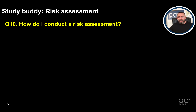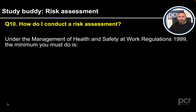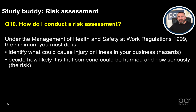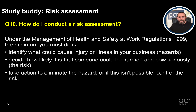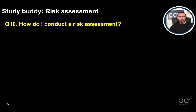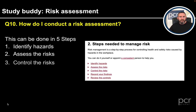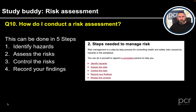Question 10: How do I conduct a risk assessment? Under the Management of Health and Safety at Work Regulations 1999, the minimum you must do is: identify what could cause injury or illness in your business — these are the hazards; decide how likely it is that someone could be harmed and how seriously — this is the risk; and take action to eliminate the hazard or, if this isn't possible, control the risk. This can be done in five steps: identify the hazards, assess the risks, control the risks, record your findings, and review the controls.